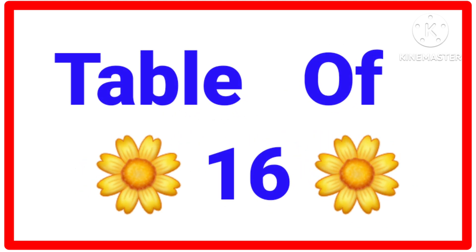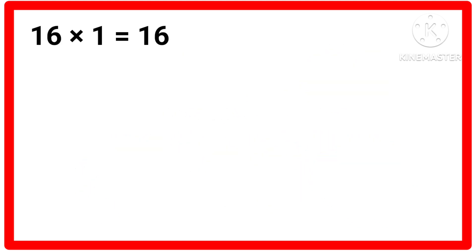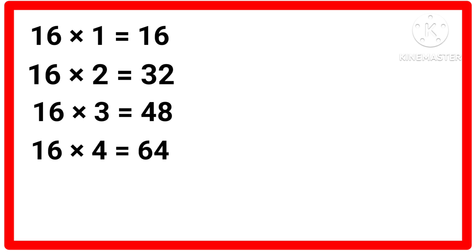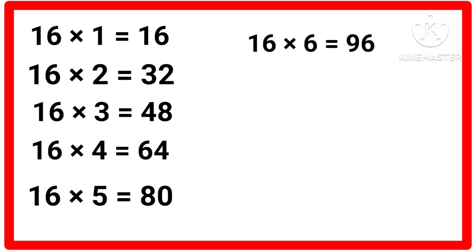Table of 16. 16 ones are 16, 16 twos are 32, 16 threes are 48, 16 fours are 64, 16 fives are 80, 16 sixes are 96.